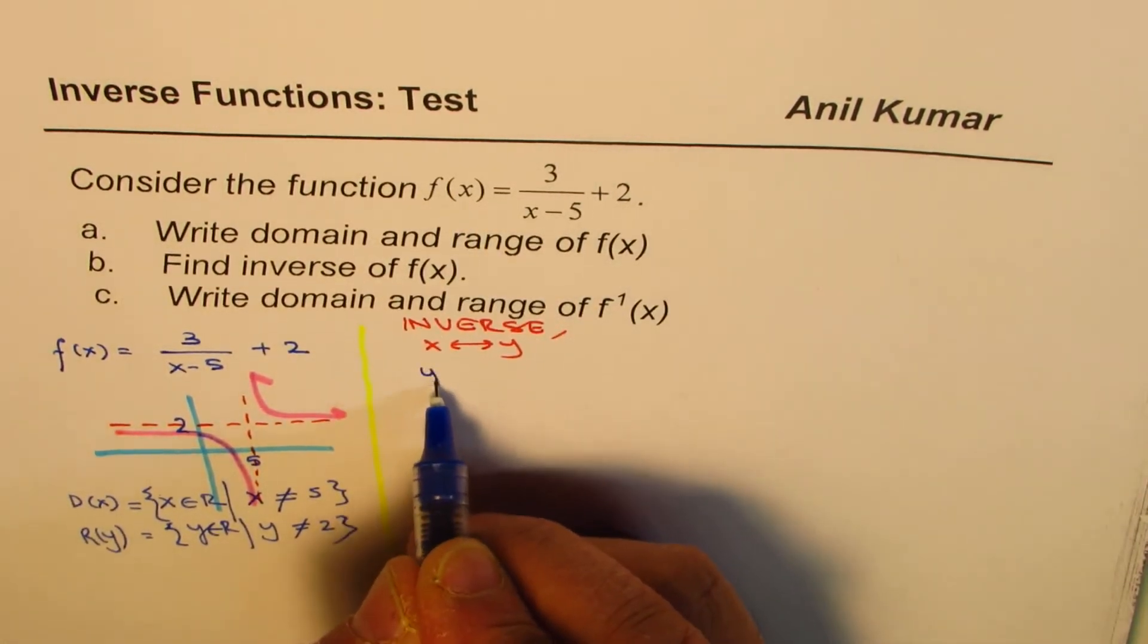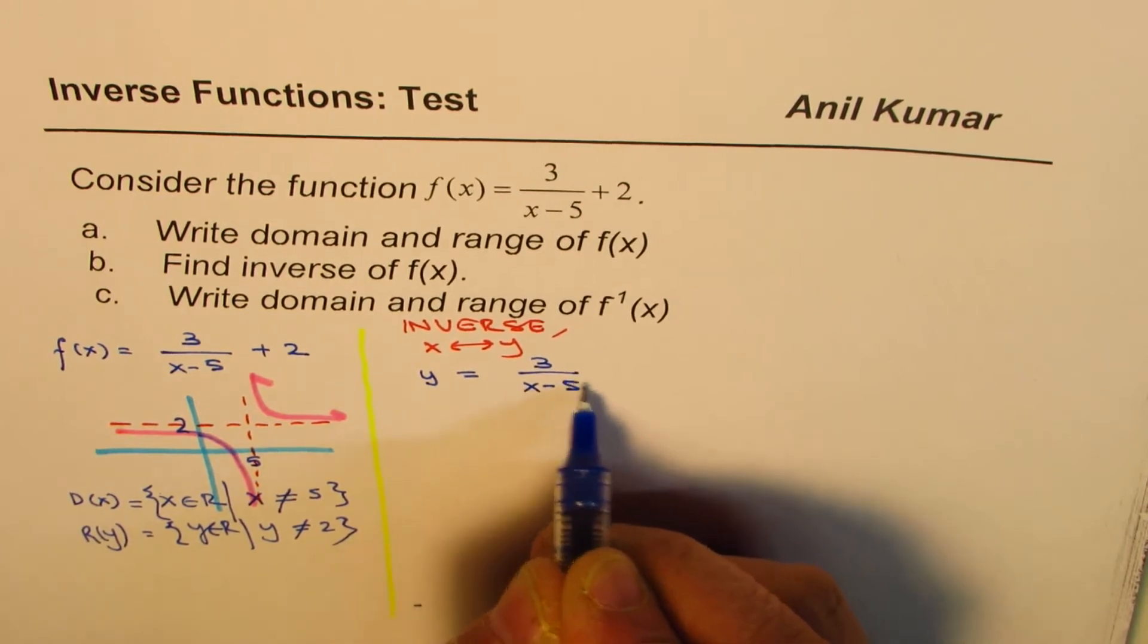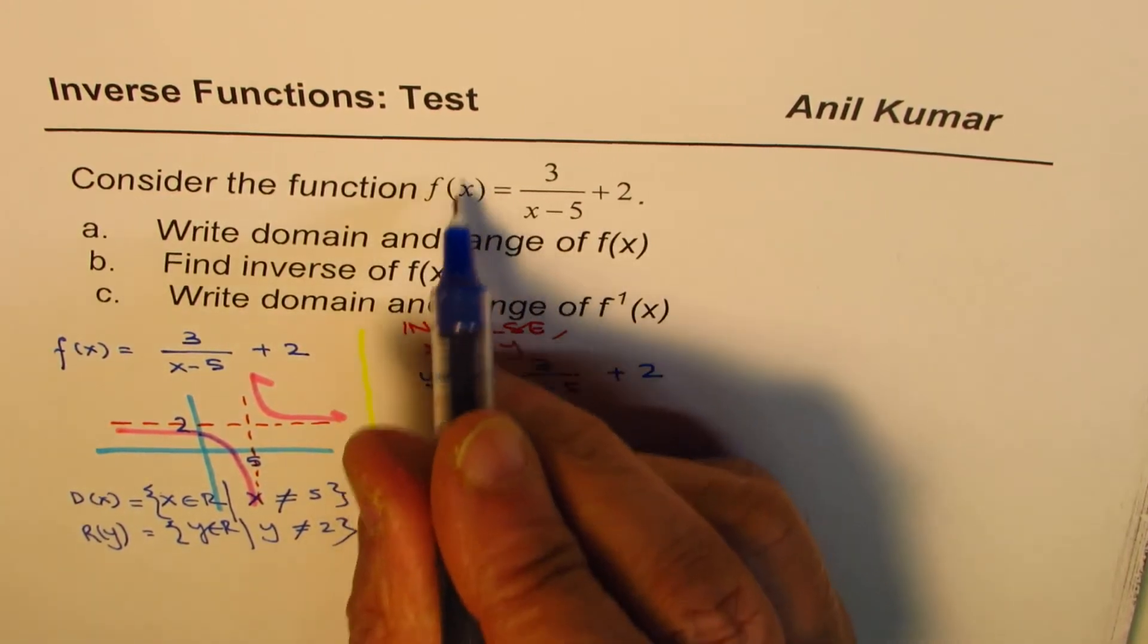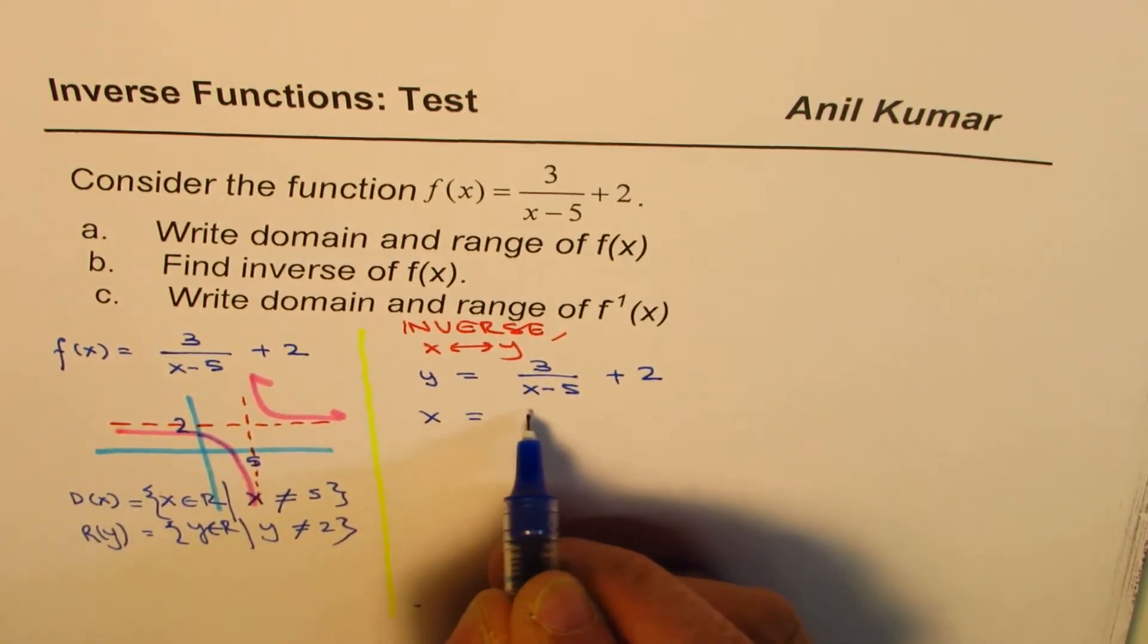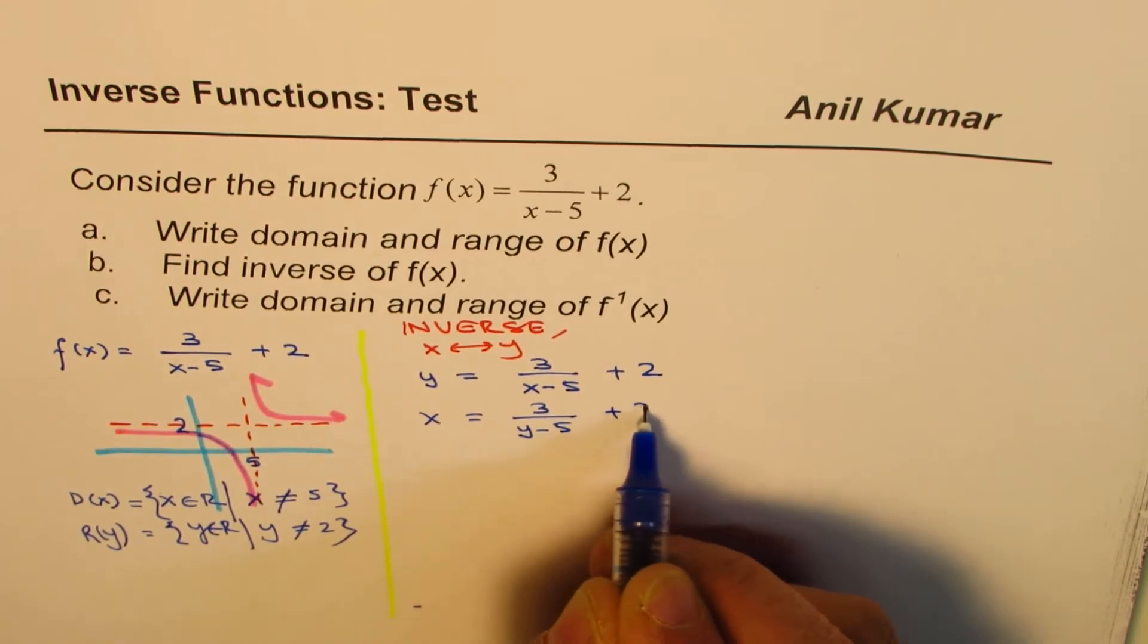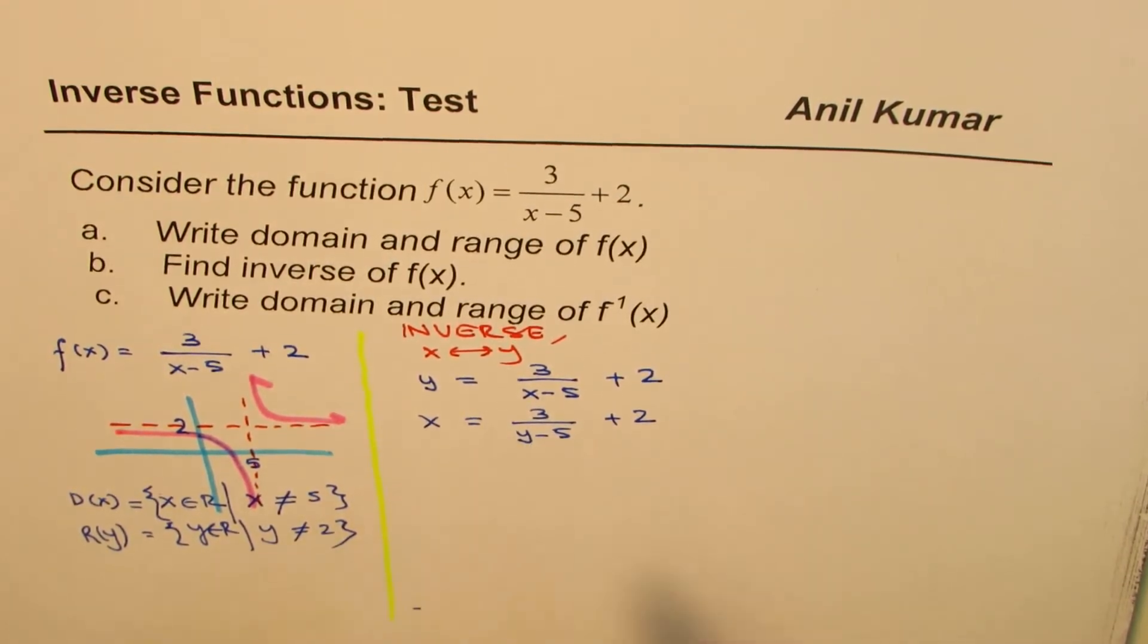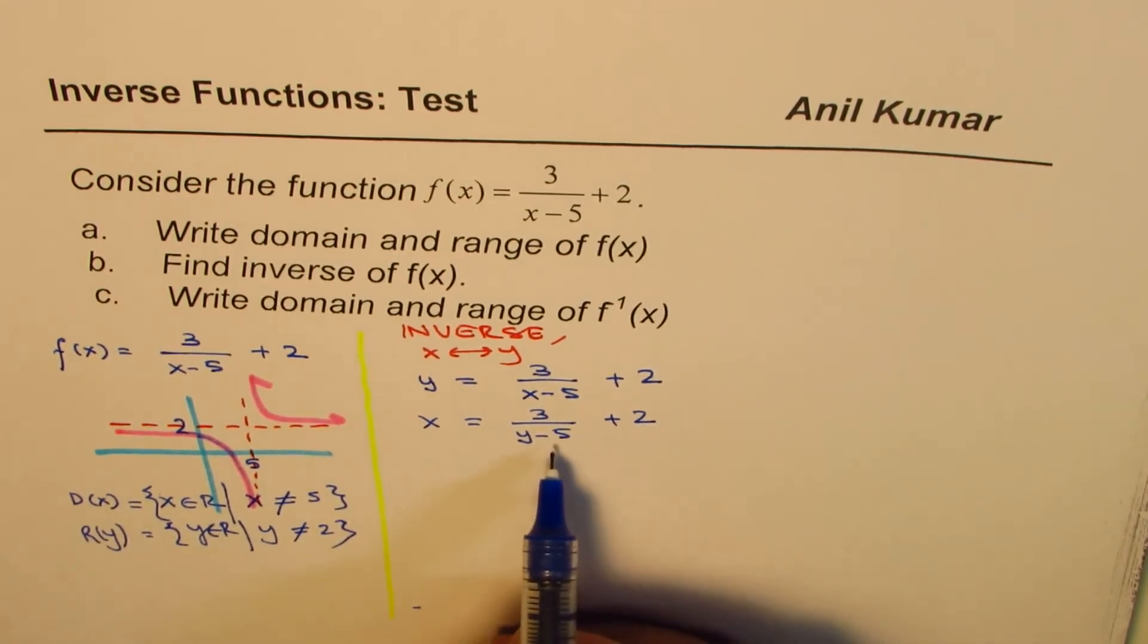So let me write this equation as y equals to 3 over x minus 5 plus 2. So I replaced f(x) as y. Now we'll swap. So we have x equals to 3 over y minus 5 plus 2. We need to now isolate y. That's the whole thing.